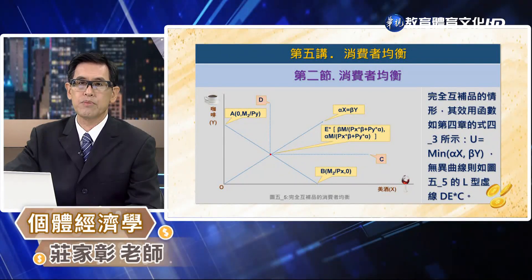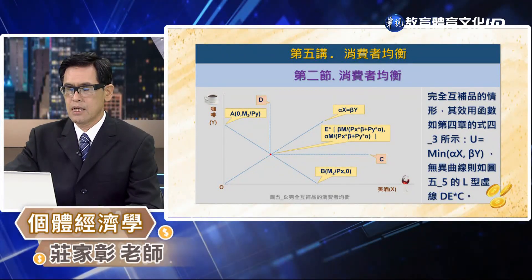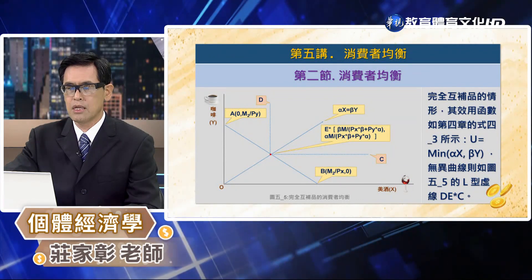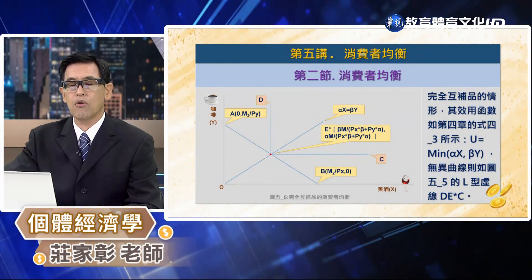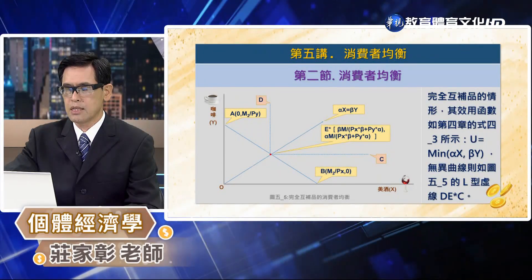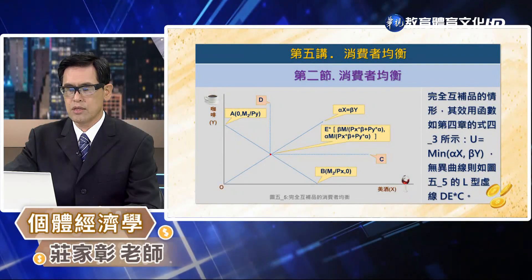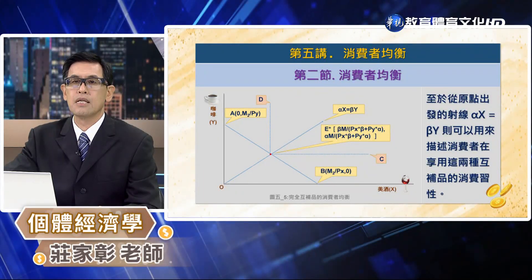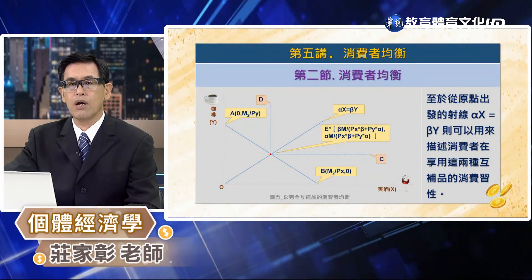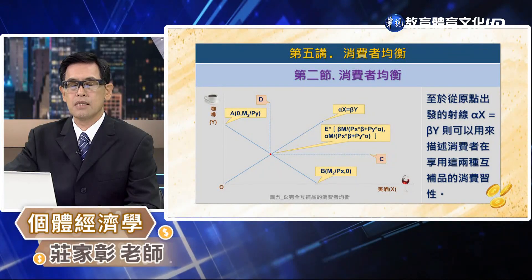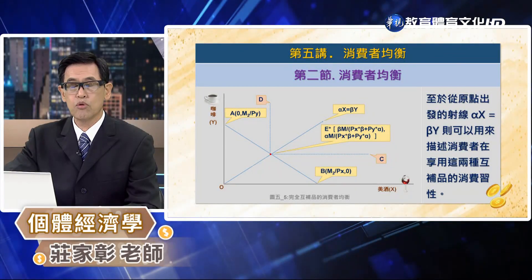如果進一步假設模甲的預算是60元，那麼模甲的預算限制式就會變成 2X + 3Y = 60，而最適的消費組合點 B* 的坐標是 (30, 0)，就代表消費者只消費香蕉而不消費巴勒，如圖5-4所示。介紹完完全替代商品，我們繼續來看完全互補品。完全互補品是說這兩種商品必須同時一起消費，不能取代，它的效用函數是 U = min(αX, βY)，而無異曲線是 L 型。